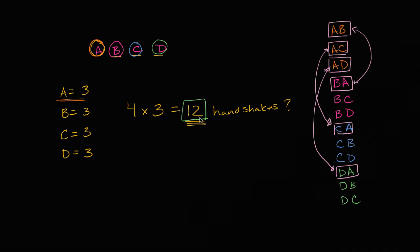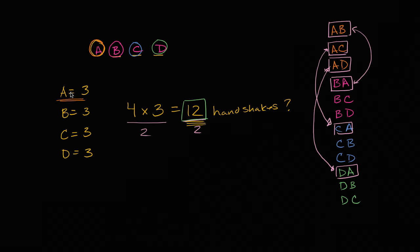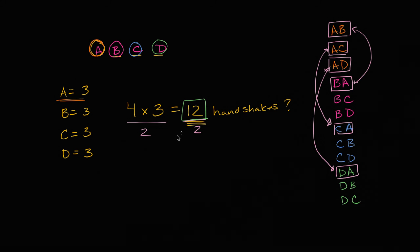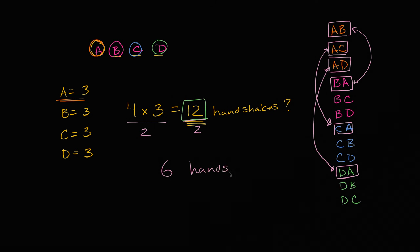So if we're double counting, what should we do to this number 12? We should just divide it by two. Over here we're counting when A shakes D's hand, and over here we're counting when D shakes A's hand — but that's really the same thing. So if we divide by two: four times three divided by two is 12 divided by two, and we get a total of six handshakes.